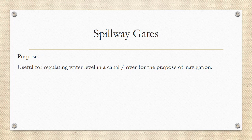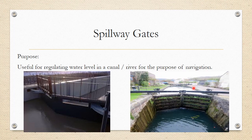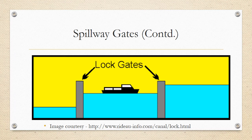Spillway gates are basically gates used for regulating water level in a canal or river for the purpose of navigation. Here are some photographs of spillway gates — this is a spillway gate built across a navigation canal. You can see there are two gates, closed at an angle. These are navigation channels through which boats can pass, and these gates are closing the cross section.